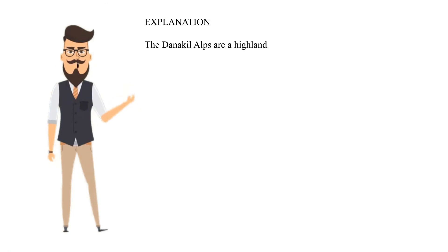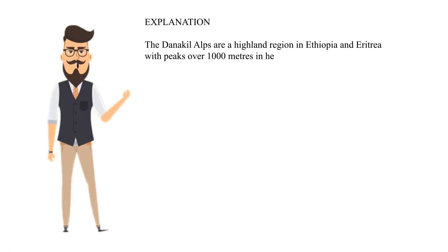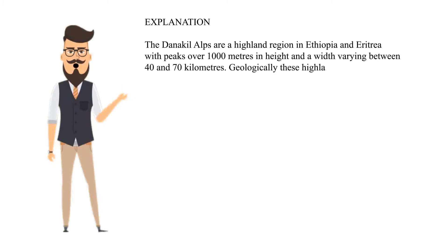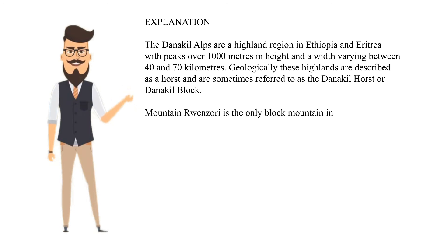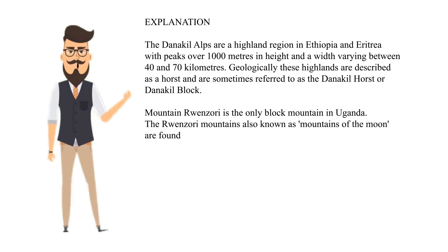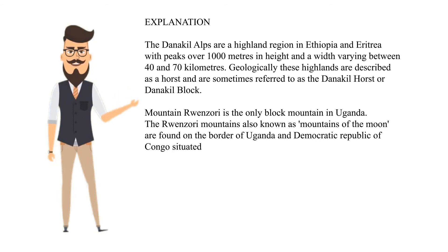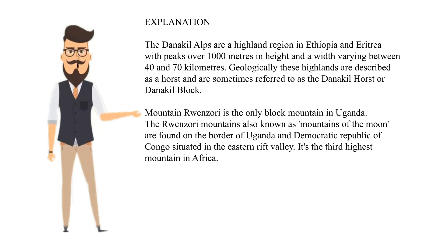Explanation. The Danakil Alps are a highland region in Ethiopia and Eritrea with peaks over 1,000 meters in height and a width varying between 40 and 70 kilometers. Geologically these highlands are described as a horst and are sometimes referred to as the Danakil Horst or Danakil Block. Mountain Rwenzori is the only block mountain in Uganda. The Rwenzori Mountains, also known as Mountains of the Moon, are found on the border of Uganda and Democratic Republic of Congo, situated in the Eastern Rift Valley. It is the third highest mountain in Africa.